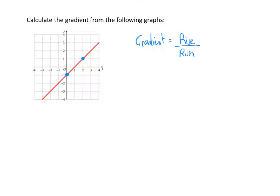I need to work out how many I need to go up or down, and how many I need to go across to get from my first point to my second point. Starting at the point furthest to the left, to go from this point up to my second point, I need to go up two squares, so my rise is going to be two. Then working out how many I need to go across — I need to go across two, so my run is going to be two. So to calculate the gradient, it's going to be two divided by two, which equals one. So the line has a gradient of one.